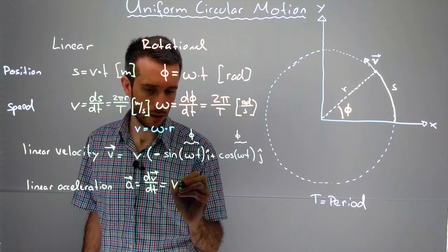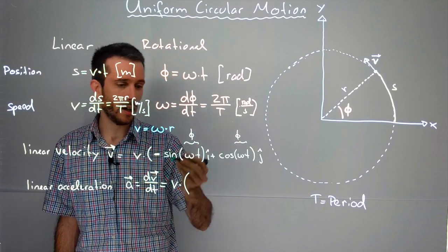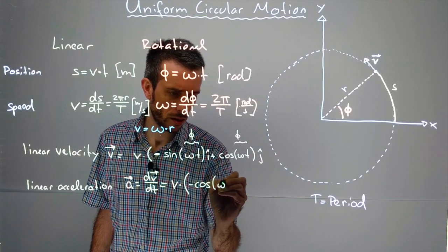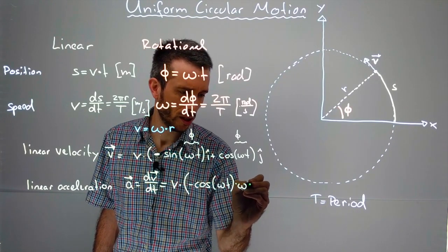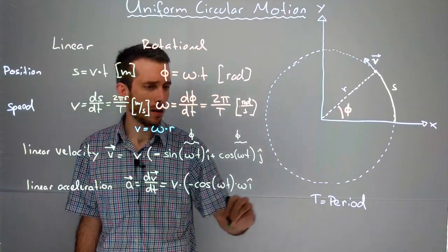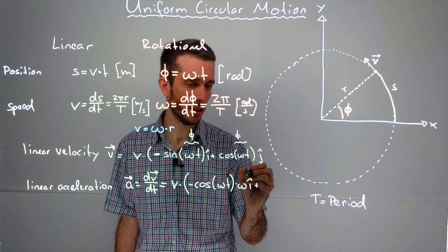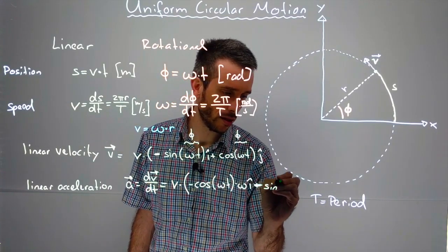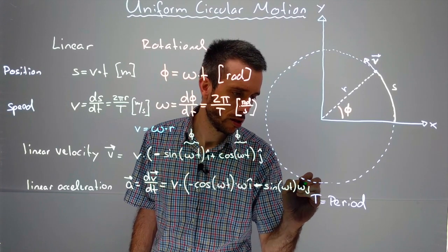V is a constant. If I derive sine, I get cosine. Don't forget, inner derivation, times ω, i-hat, plus, if I derive cosine, what do I get? I get minus sine, times ω, j-hat.